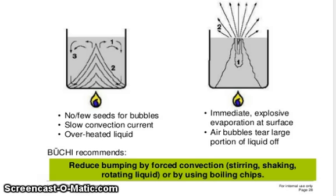With no or few seed bubbles, there is slow convection current and overheated liquid, leading to immediately explosive evaporation at the surface — air bubbles steer a large portion of liquid off. Reduce bumping by forced convection through stirring, shaking, rotating the liquid, or by using boiling chips.